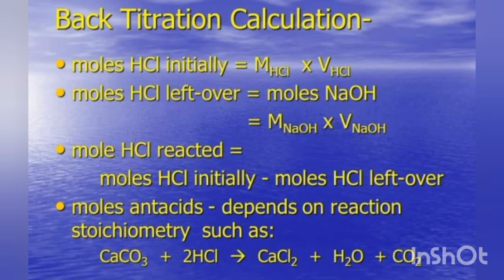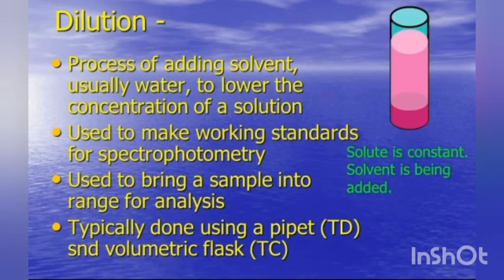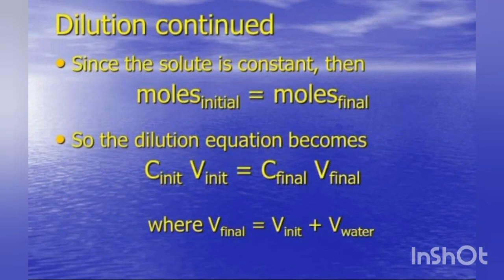This depends on the reaction stoichiometry, such as calcium carbonate plus hydrochloric acid giving calcium chloride, water, and carbon dioxide. Now, what is dilution? It is a process of adding solvent — mostly water — to lower the concentration of a solution. Here the solute is constant and solvent is being added. It is used to make working standards for spectrometry and to bring a sample into range for analysis, typically done using a pipette or volumetric flask.